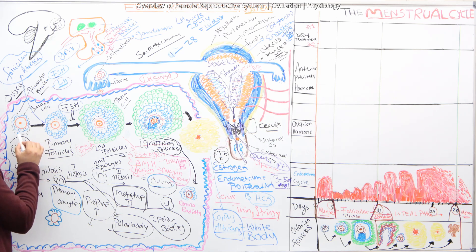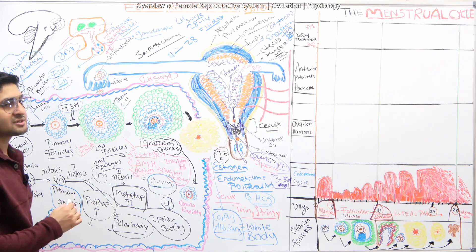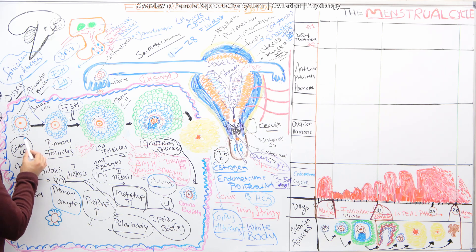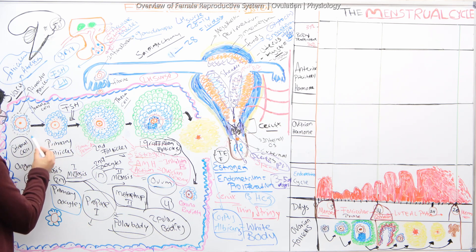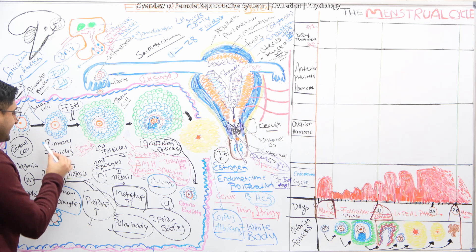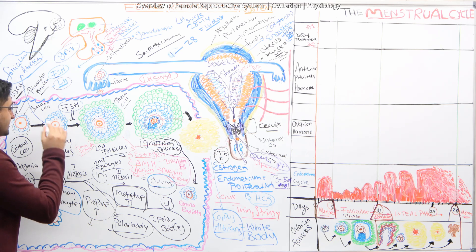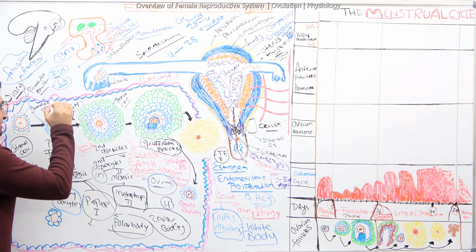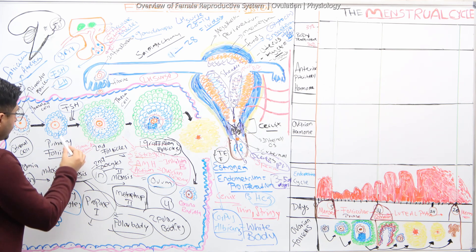This process — where primordial follicles convert into primary follicles and then secondary follicles — is called folliculogenesis. Nearby stromal cells act like growth factors, supplying nutrients that cause the primordial follicle to proliferate into a primary follicle. Importantly, FSH does not act on primordial follicles — it acts on primary follicles.